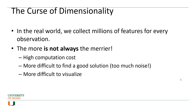In the real world, we collect millions of features for every observation. More is not necessarily always the merrier. When you have too many features, too much information, you're going to face higher computation costs. Your algorithms are going to be more expensive to run, and it's going to be more difficult to find a good solution.